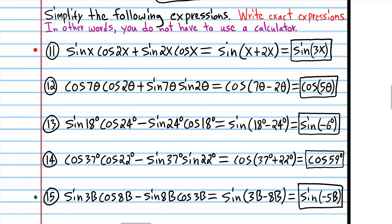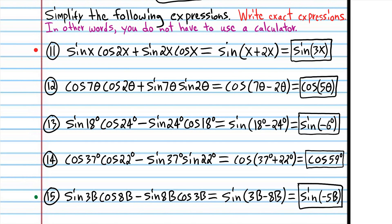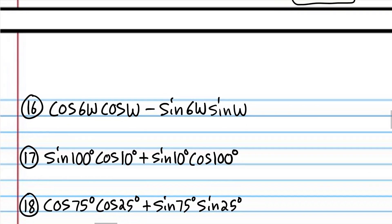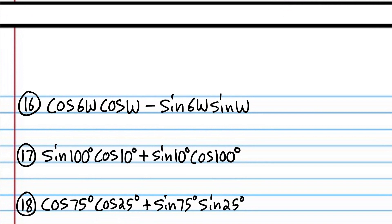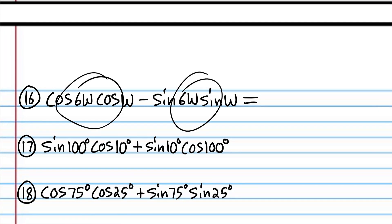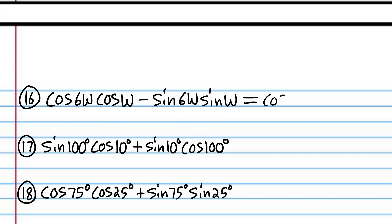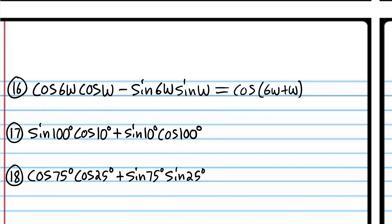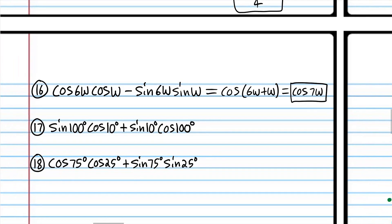Take a picture of these problems to help you with number 16. Try number 16 and when you come back we'll do it together. We're back. We have a product of cosines and a product of sines, so we're going to use the cosine function. We have a subtraction symbol so remember it's going to be the opposite sign — we add: 6ω plus ω simplifies to cosine(7ω).